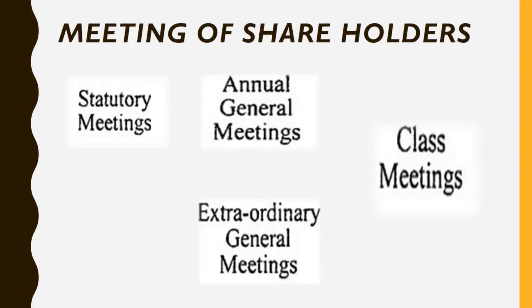Next is the meeting of shareholders. Meetings of shareholders are divided into four types, as already mentioned: statutory meetings, annual general meetings, extraordinary general meetings, and class meetings.